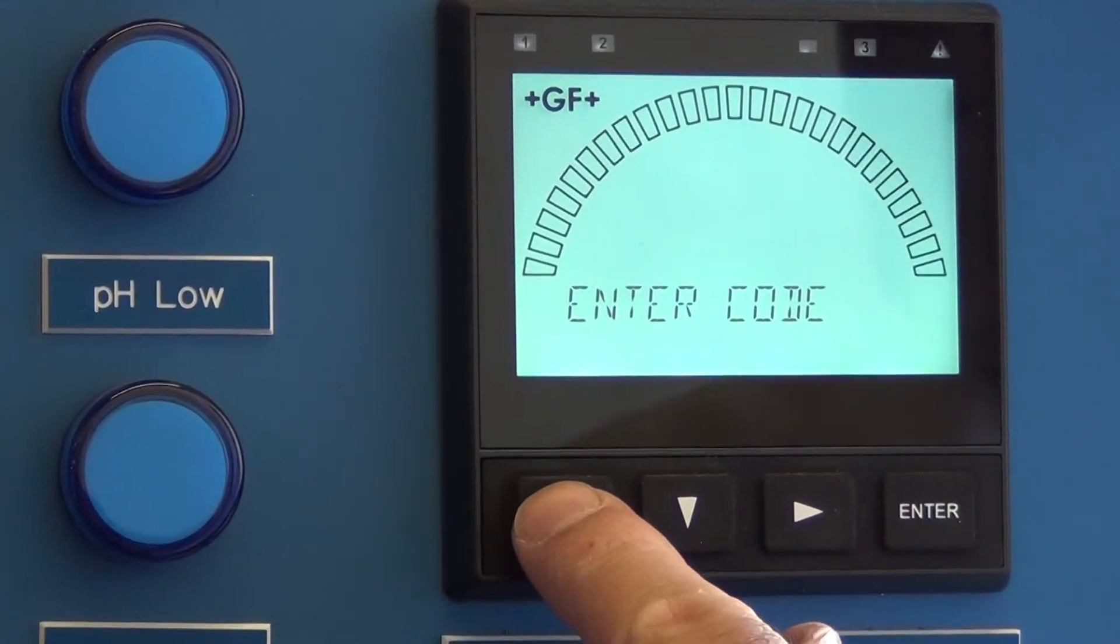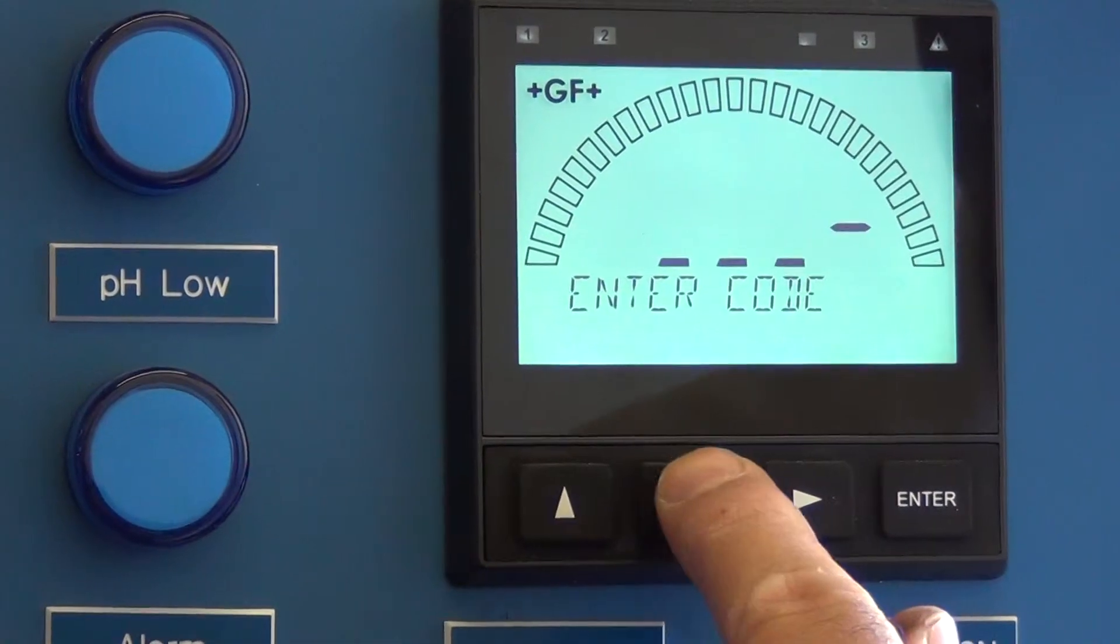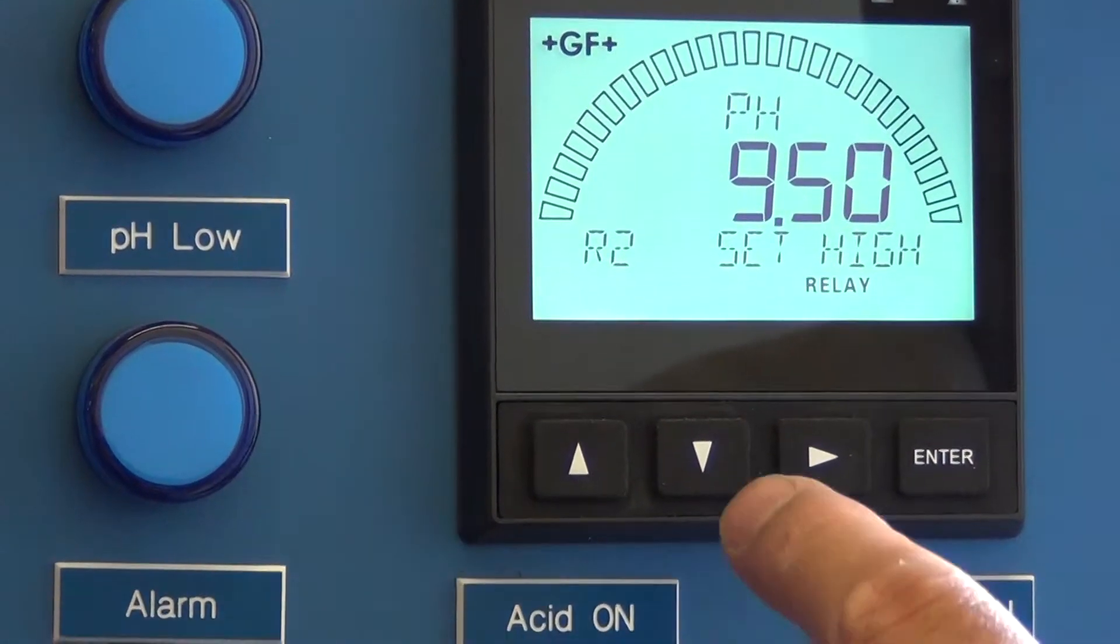We want to enter the code. The code is up, up, up, down. That's the default that the meter comes with.